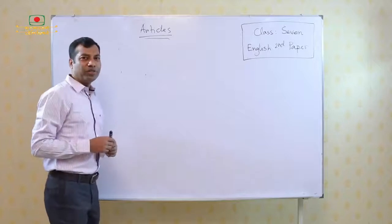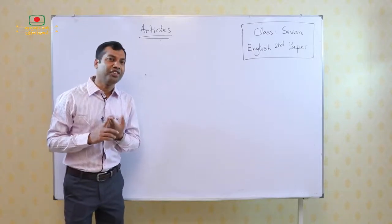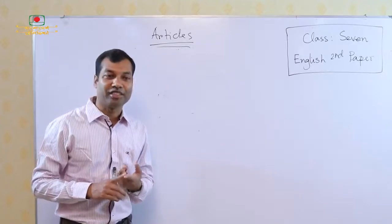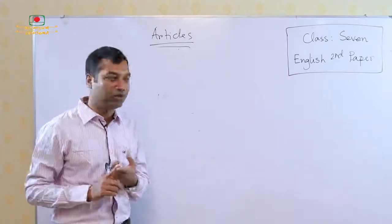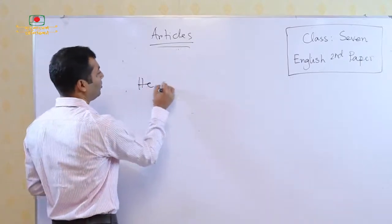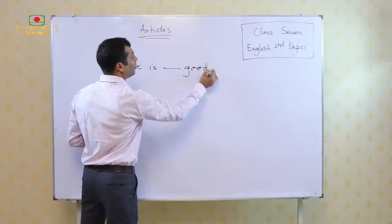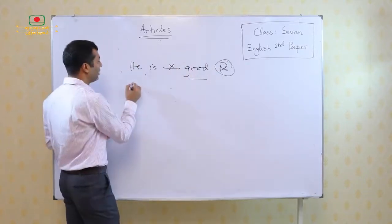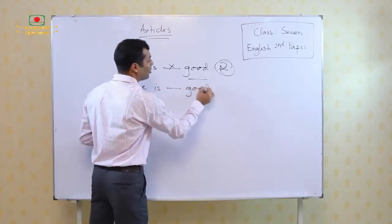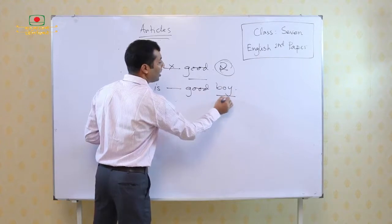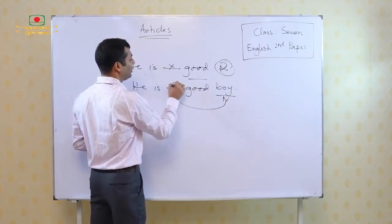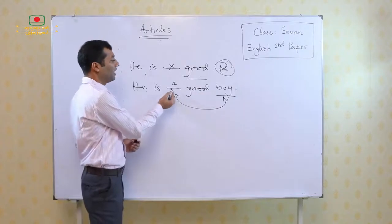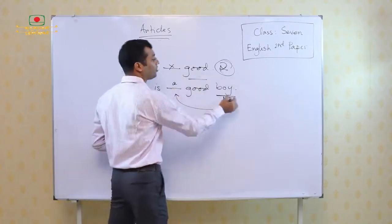At first let us try where to use an article. Listen, articles are directly connected to nouns. If there is a noun, there might be an article. And if there is no noun, there cannot be any articles. For example, he is good — is there any noun? There is no noun, so it will be a cross. But if I use he is dash good boy, you can see here 'boy' is the noun. Only for this we have to use an article, that is A. So he is good — no article. And he is a good boy — we have used the article A here.